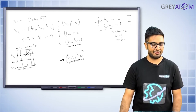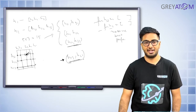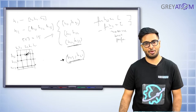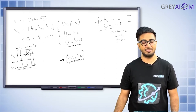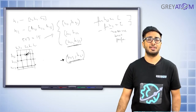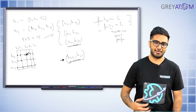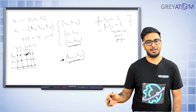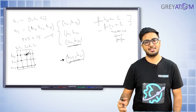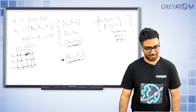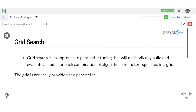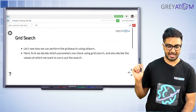Grid search can be computationally expensive. With 10 hyper parameters each having 5 values, you'd have 5 to the power 10 possible combinations to search. Random search addresses this by randomly selecting points within the grid to estimate the best performing combination. That's the concept of grid search versus random search.